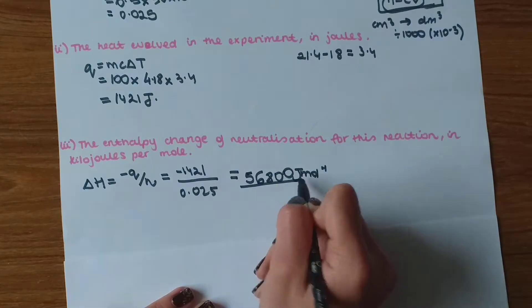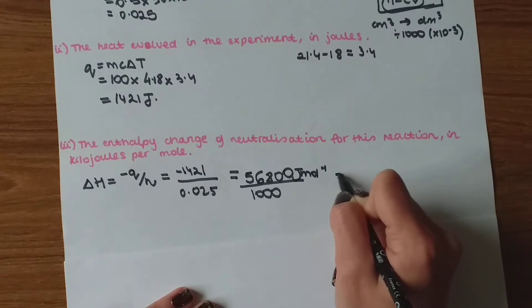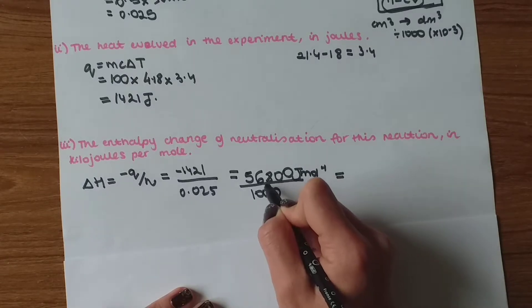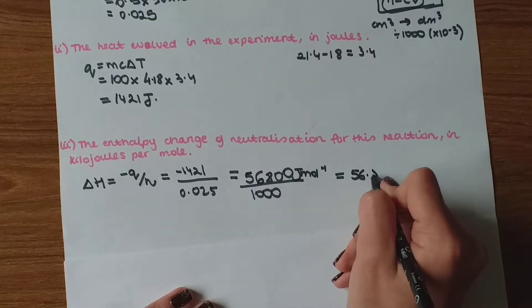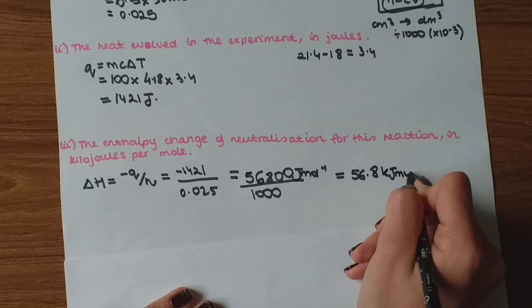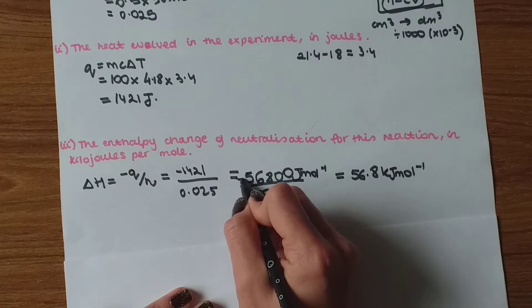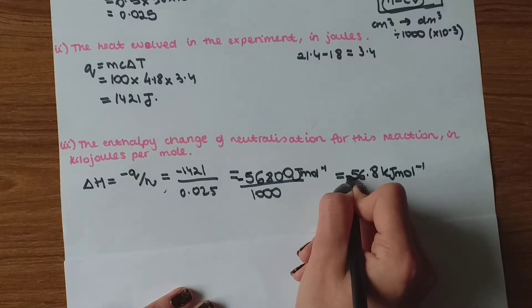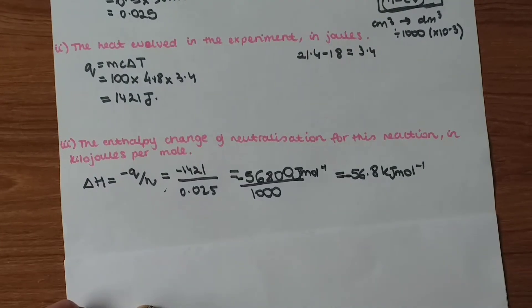Dividing by 1000, we get 56.8 kJ mol⁻¹. I lost my minus sign — it comes from the equation — so the answer is minus 56.8 kJ mol⁻¹.